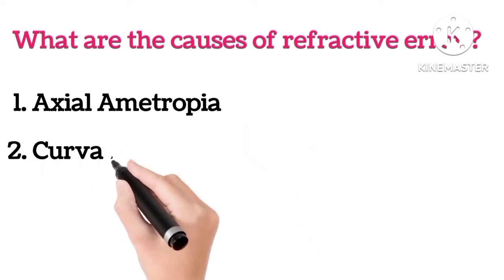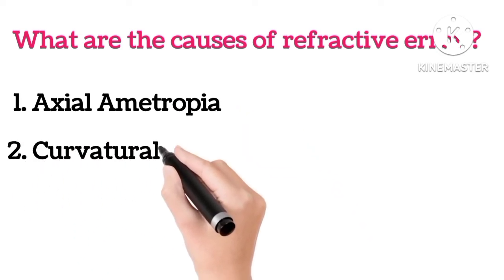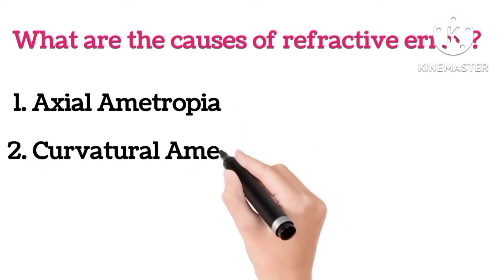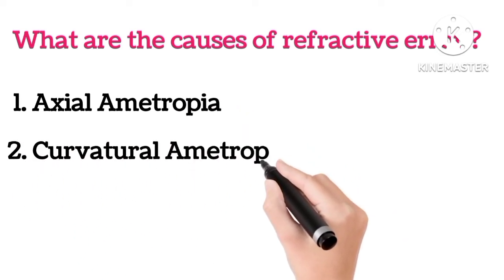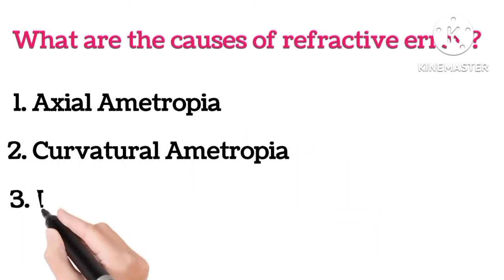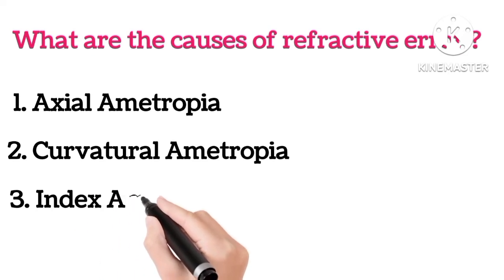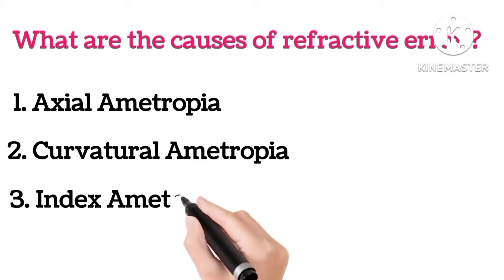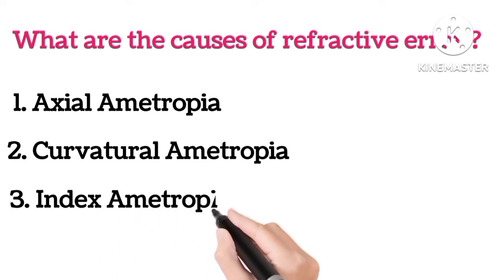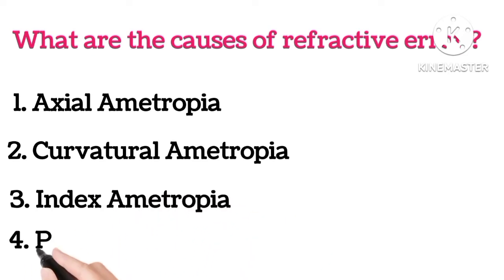The first one is axial ametropia. The other causes are curvaceous ametropia, index ametropia, and positional ametropia.